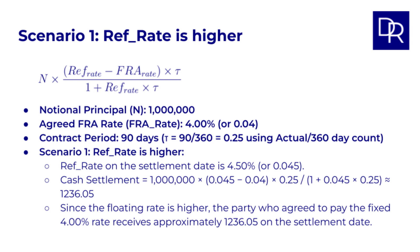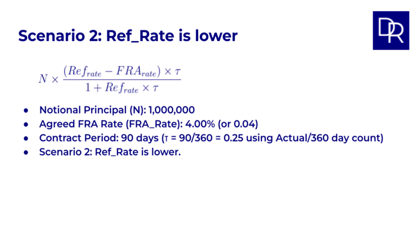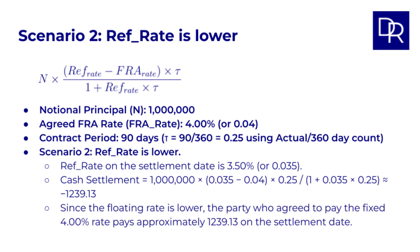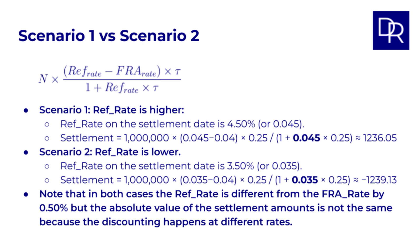In this scenario, since the floating rate is higher, the party who agreed to pay the fixed 4% rate receives approximately $1,236 on the settlement date. In Scenario 2, the REF rate is lower. Suppose the REF rate on the settlement date is 3.5%. The cash settlement is 1,000,000 times (3.5% minus 4%) times a quarter, divided by (1 plus 3.5% times a quarter), which is approximately negative $1,239. Since the floating rate is lower, the party who agreed to pay the fixed 4% rate pays approximately $1,239. Note that in both cases the REF rate differs from the FRA rate by half a percent, but the absolute settlement amounts are not the same because the discounting happens at different rates.